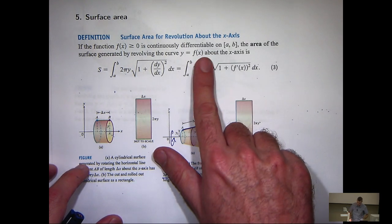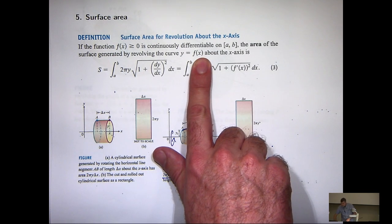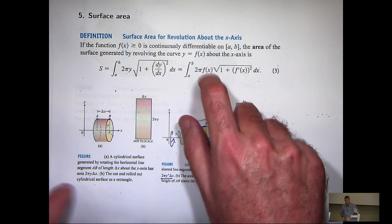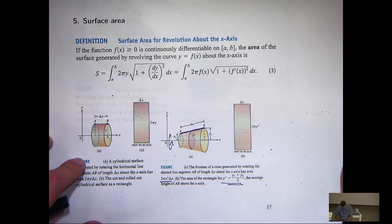If I cover that up, it looks a little bit like arc length. Okay? But it's slightly more complicated. So where does it come from? Well, I'm glad you asked.